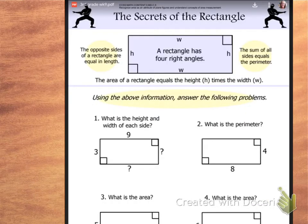Okay, for this next sheet, they're telling you some secrets that go along with rectangles, so some little hints. It says the opposite sides of a rectangle are equal in length. The sum, remember sum is when you add all the sides together, when you add the sides. The sum of all sides equal the perimeter. So there's two little hints for you.